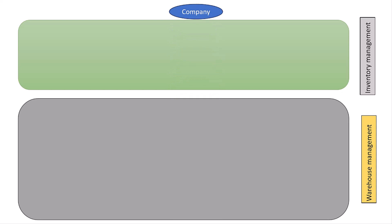Hey guys, welcome to my channel. In this video we see the organization structure of a warehouse. For the general purpose, let's start with the company code. A company code represents a legal entity within an organization and is used for financial and accounting purposes.